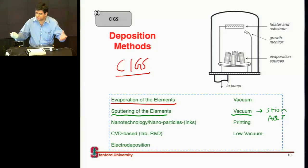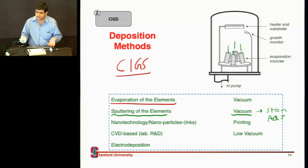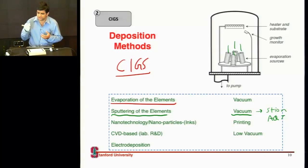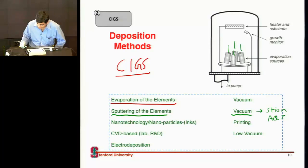They have four different targets — one with copper, one with indium, one with gallium, one with selenium — and you essentially sputter them, sometimes two or three at a time and then the other one after that. Then you do some annealing for them to mix with each other. That's one way of doing it.